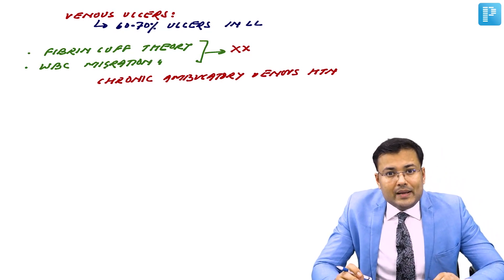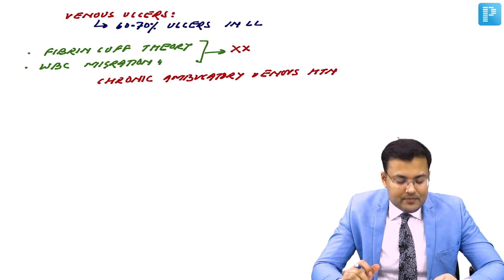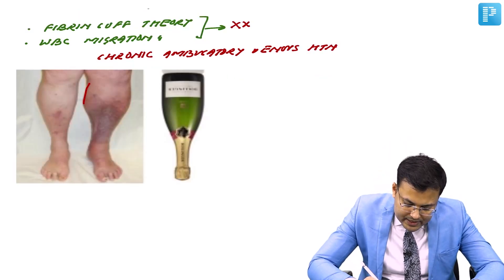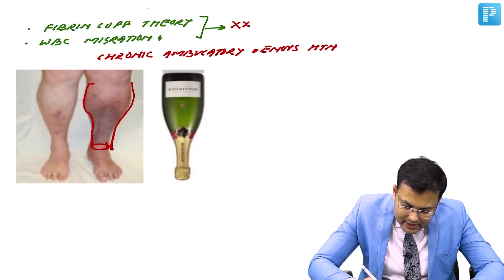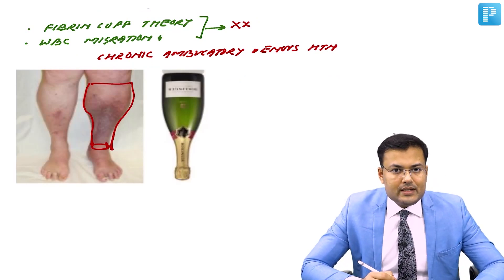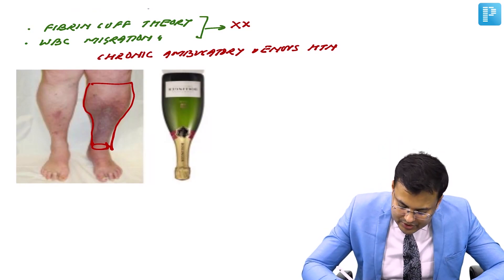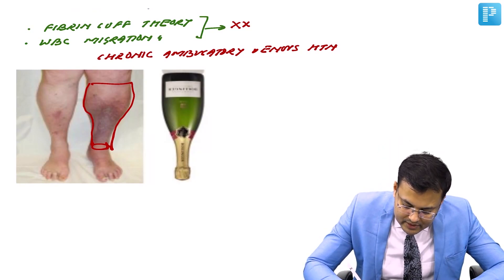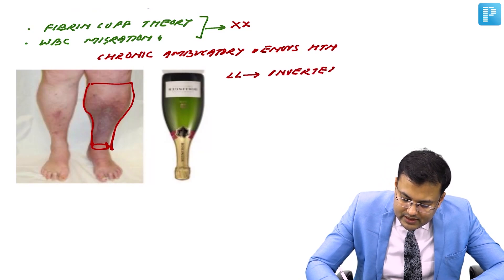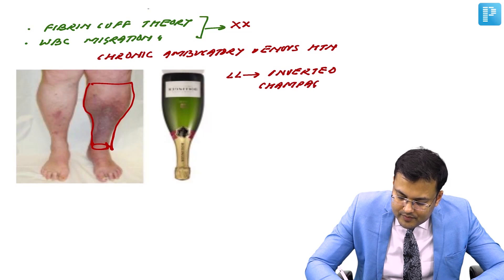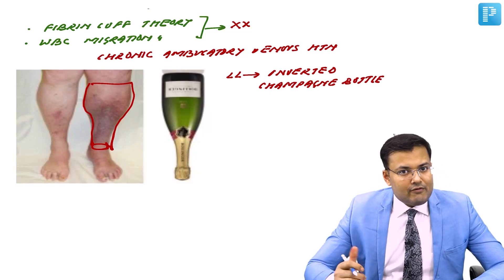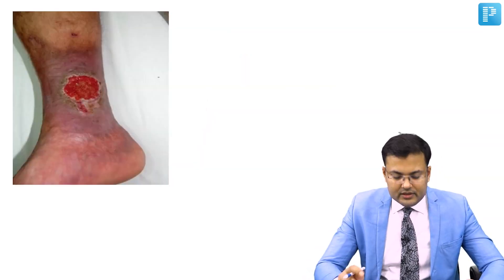If you see the appearance of the lower limb in varicose vein, it looks like an inverted champagne bottle appearance.